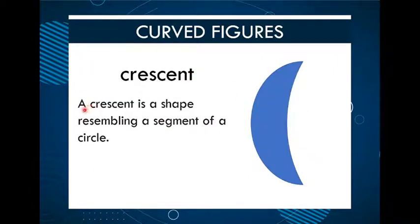Crescent. A crescent is a shape resembling a segment of a circle. It also looks like the moon, but it can be part of a circle.